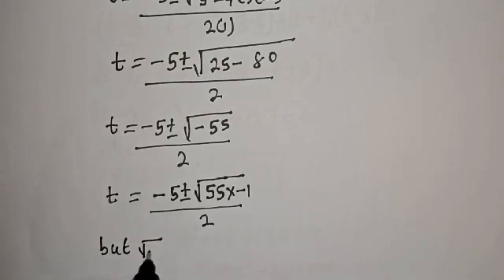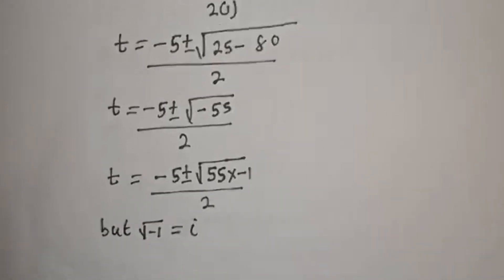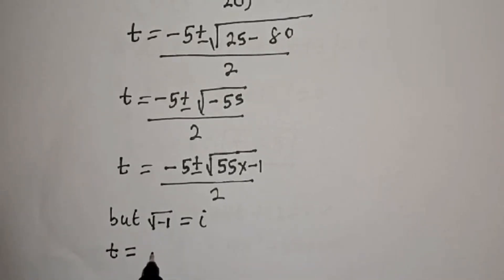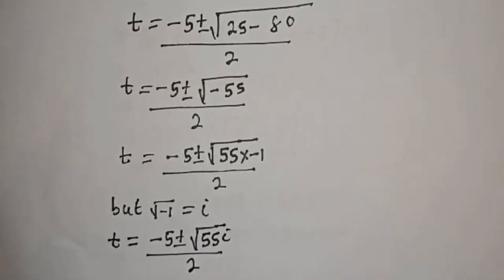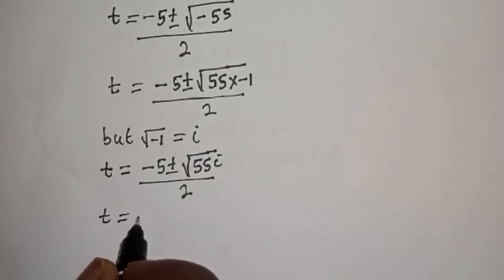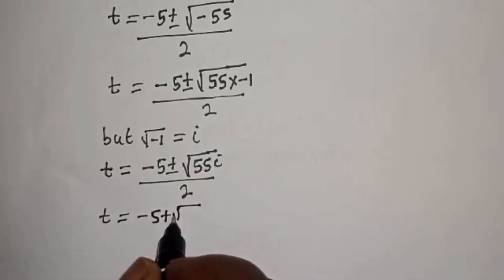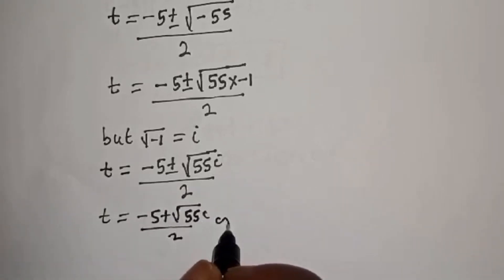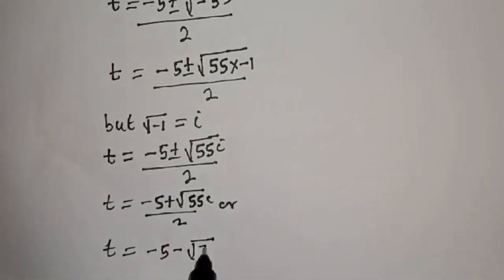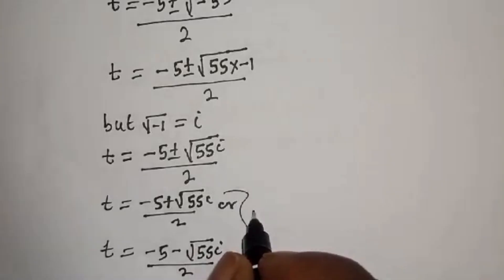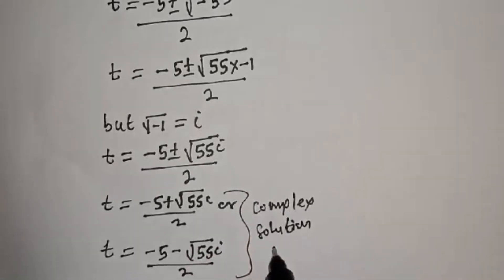But square root of minus 1 is equal to i. Then t equals minus 5 plus or minus square root of 55 times i, over 2. So t equals minus 5 plus square root of 55 i over 2, or t equals minus 5 minus square root of 55 i over 2. But these two are complex solutions — this is rejected.